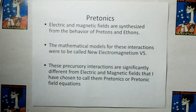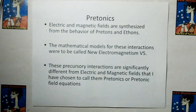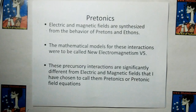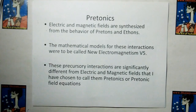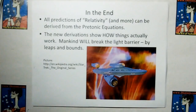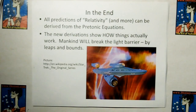Let me make a definition for protonics. Electric and magnetic fields are synthesized from the behavior of pretons and ethons, which we covered in the previous videos. The mathematical models for these interactions — I was going to call them new electromagnetism v5 — but these are precursory interactions, significantly different from electric and magnetic fields, so it's proper at this point to call them pre-tonics or pre-tonic field equations. In the end I'm going to show that all the predictions of relativity can be derived from the pre-tonic equations, and these new derivations will show that mankind will break the light barrier by leaps and bounds.